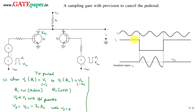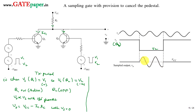Whenever the control voltage of Q2 is at V2 — meaning the control voltage of Q1 is at V1 — transmission takes place. When no signal is applied this is shown as a dotted line, and when a signal is applied it superimposes on this with a 180-degree phase shift.